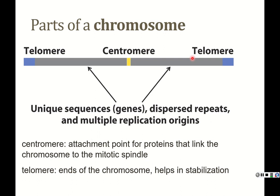Looking at the parts of a chromosome laid out linearly, the end caps and the center are these special structural regions. The ends are what we refer to as telomeres, and the middle is the centromere. The gray regions are where the unique sequences or genes are, along with a lot of repeats and multiple replication origins. The centromere is the attachment point for proteins that link the chromosome to the mitotic spindle, so when cells are dividing, that's how you make sure each cell gets a copy.